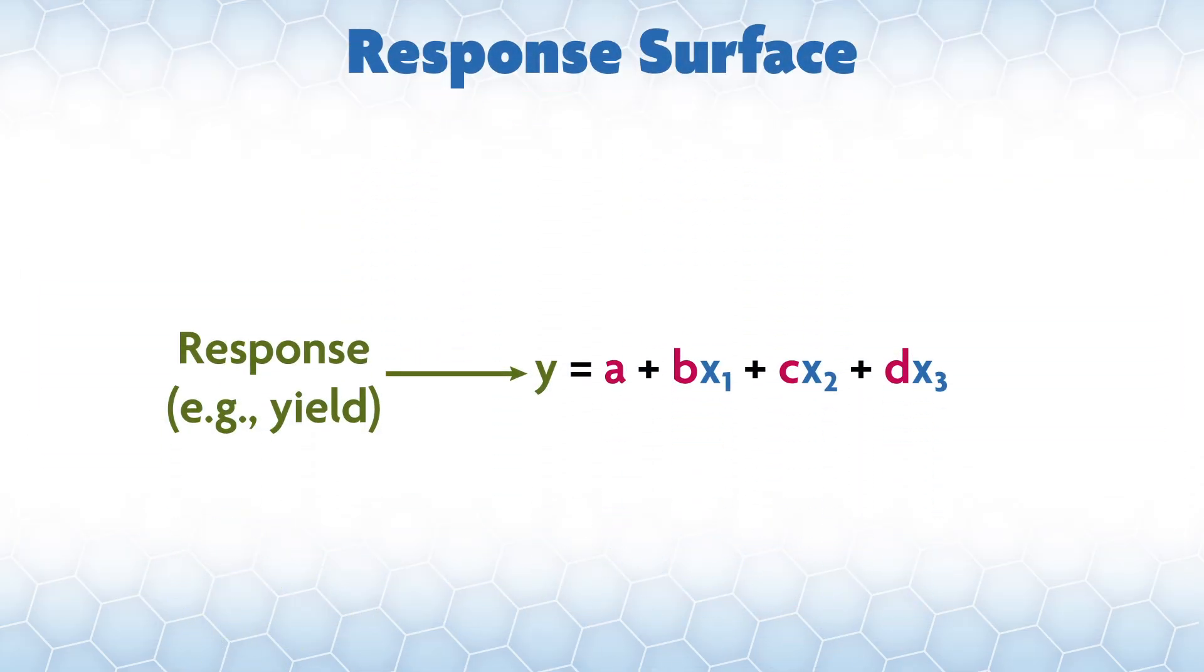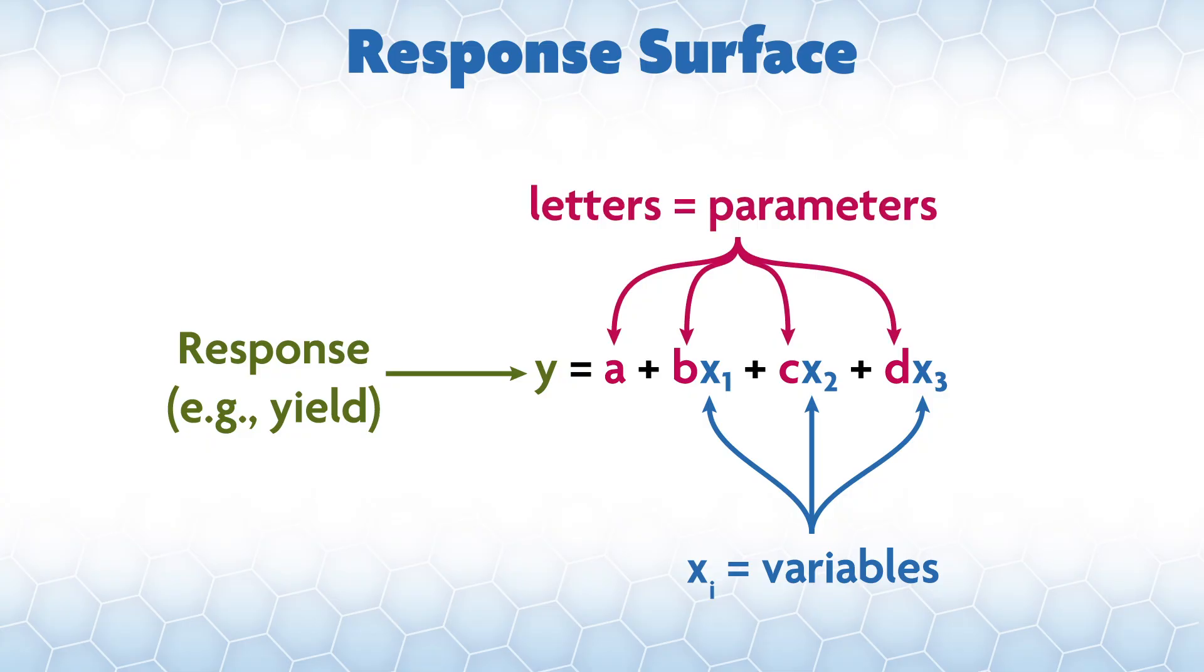What we'll be discussing is called a response surface. In these models, the thing you're looking at is called the response, Y, in the model. In this case, it will be the yield of the reaction. Then there are variables, which are the things that are being changed to look at the effect on the yield. Like the temperature or the amount of some reagent, the variables here will be given the symbol X in the model. The coefficients are called parameters, represented by letters, which give you an idea of how important a variable is to the yield. Here's a really simple model with three variables and one response to show you how these may be put together.